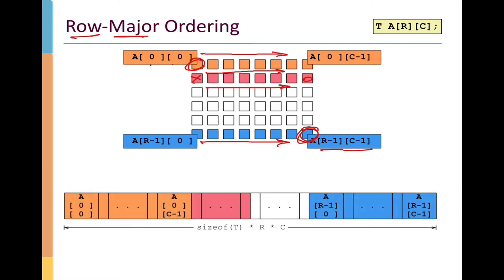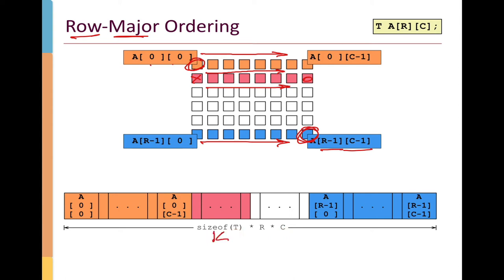Here's another visualization of the memory occupied by this array. The very lowest address stores A[0][0], and as we progress up through memory, the first row is stored entirely before the second row begins, and so on until the last row. The final element A[R-1][C-1] is at the highest memory address. The total memory occupied is rows times columns times the size of each element K.